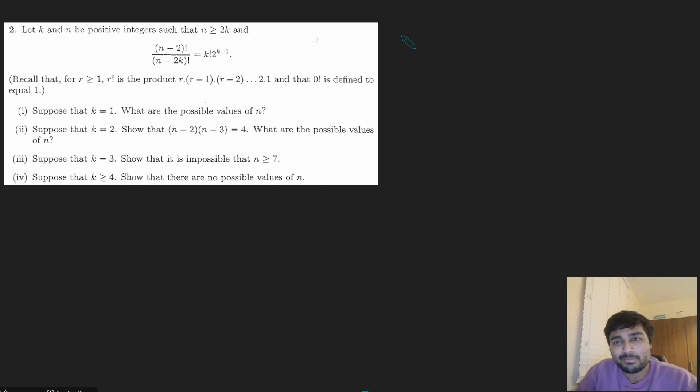Let's dive right in. Part 1. We want to suppose k is 1, what are the possible values for n? Well, when k is 1,